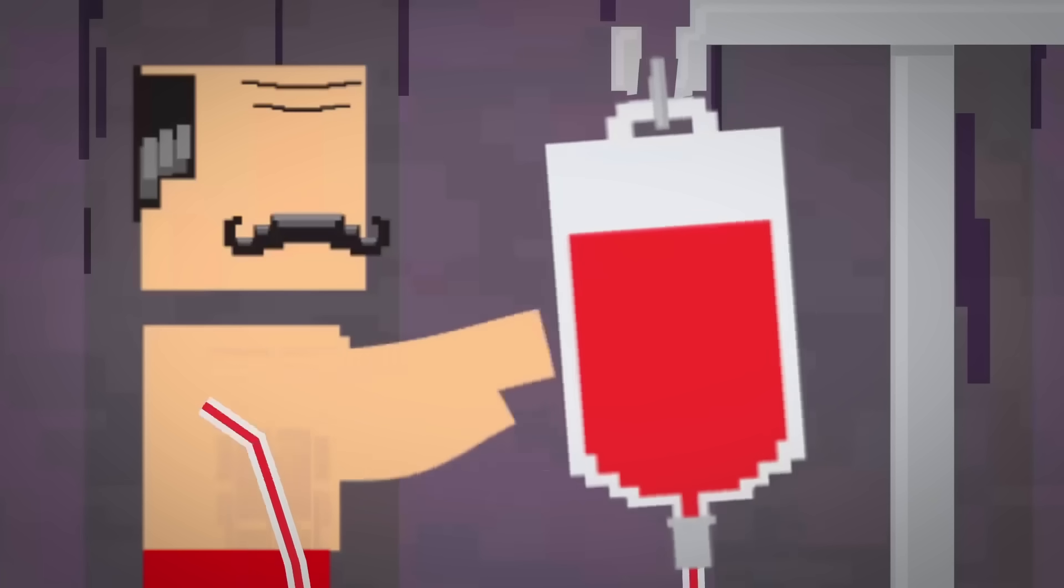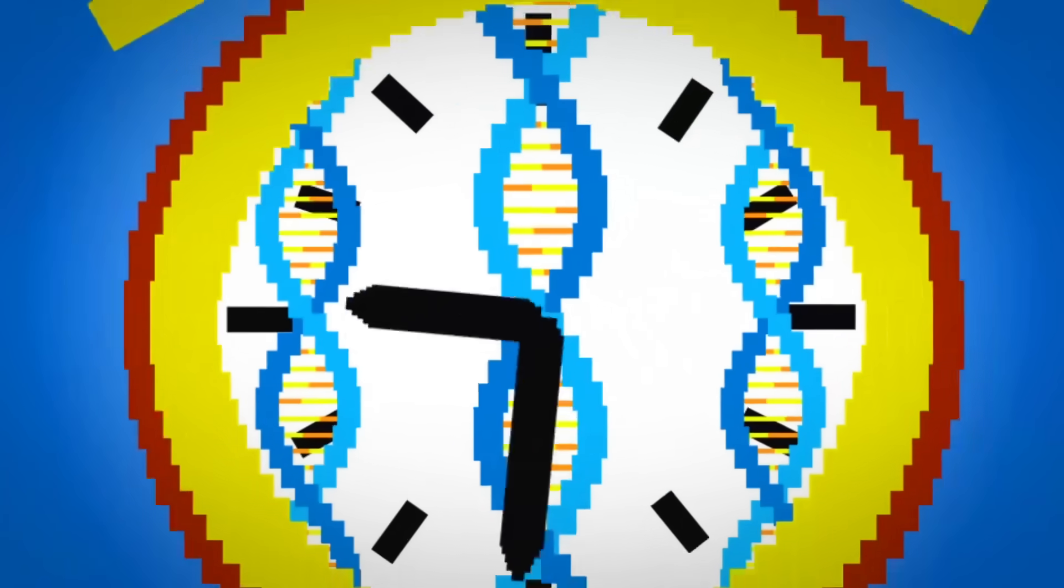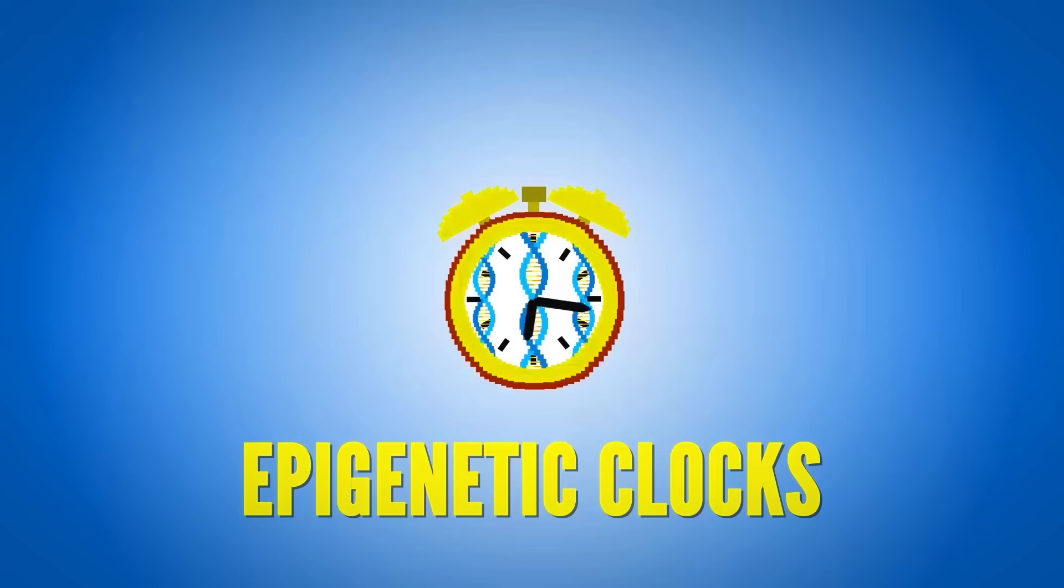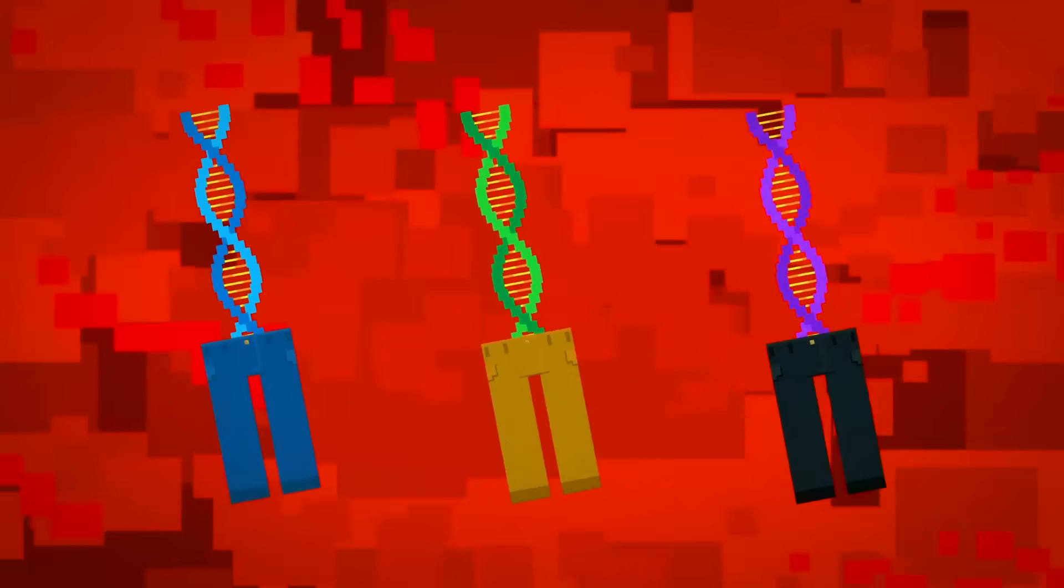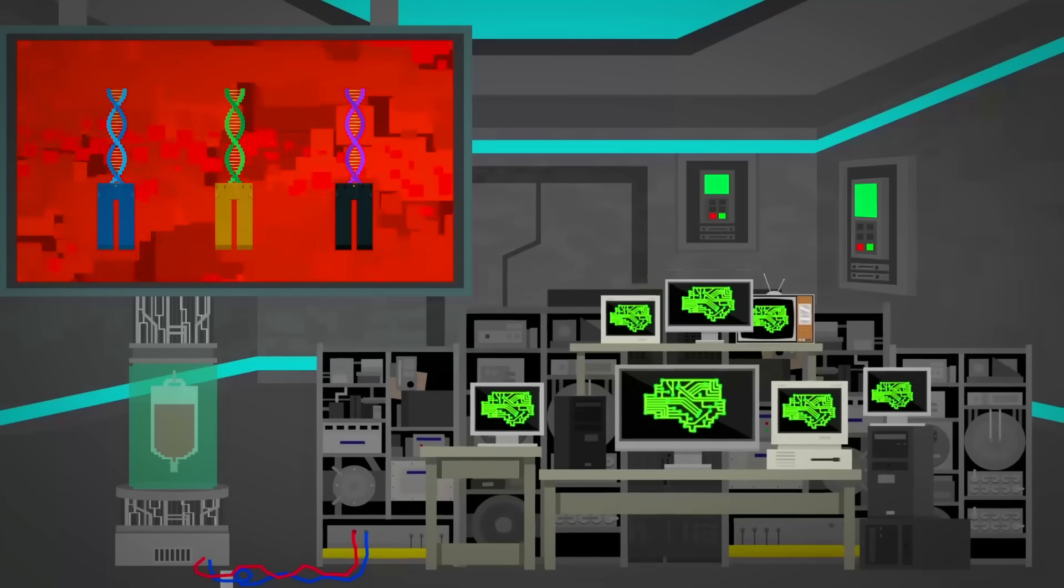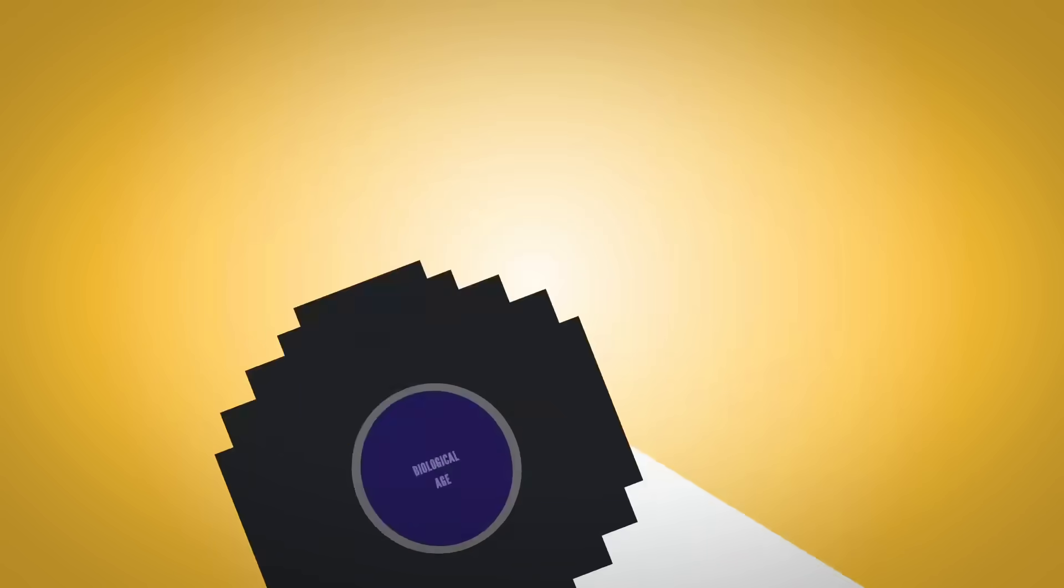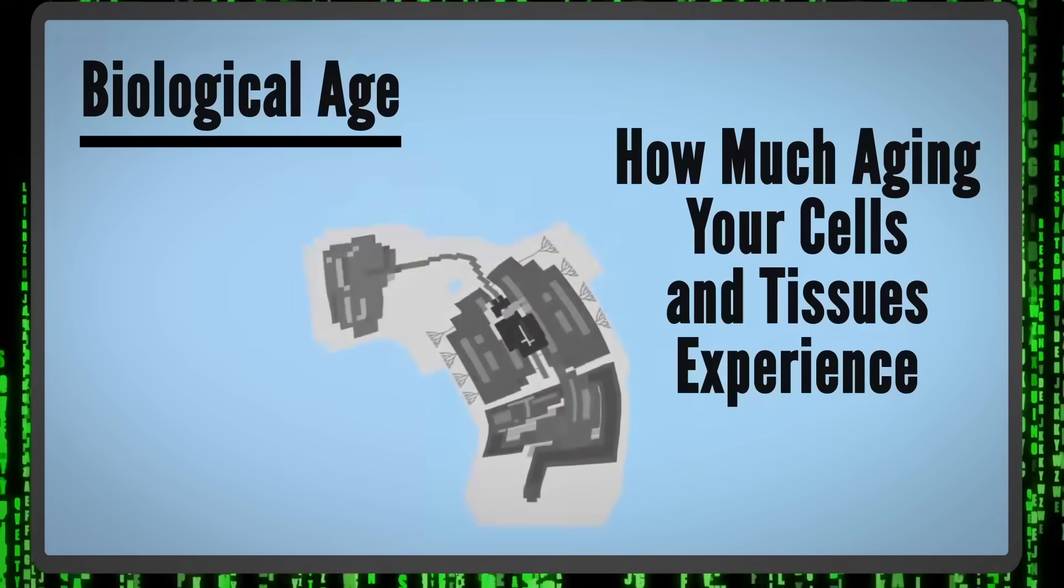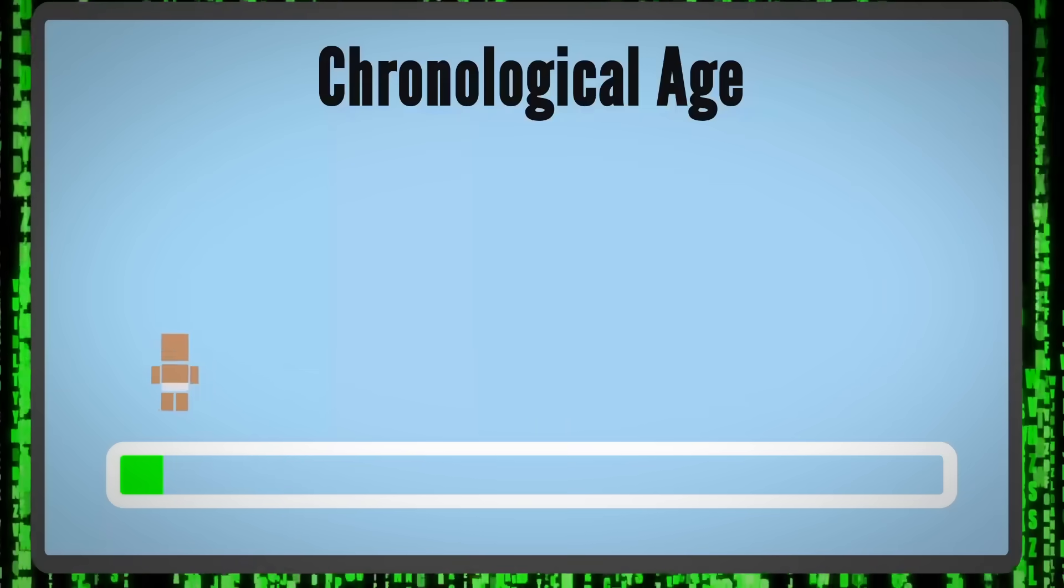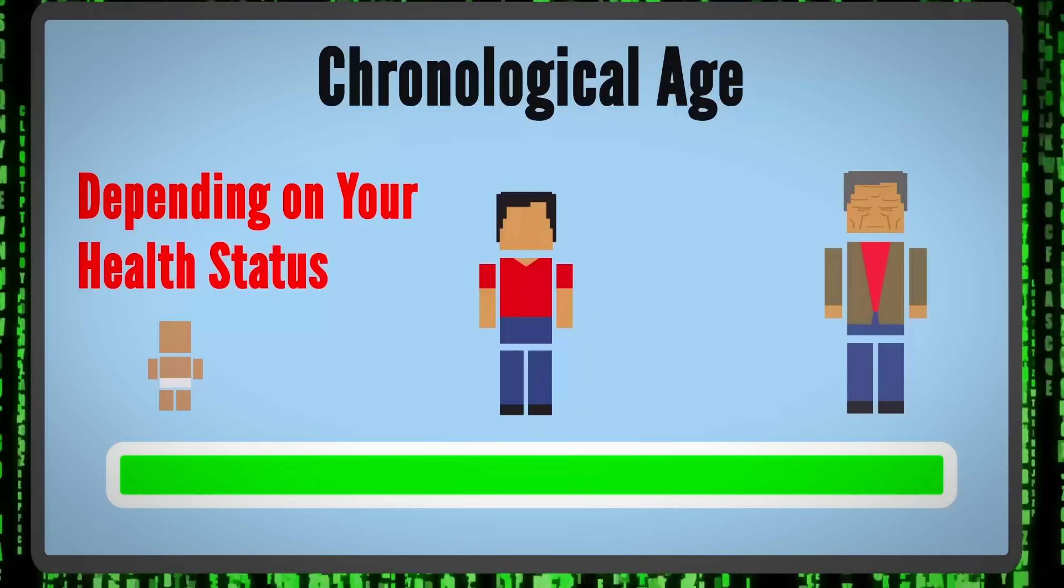While a routine blood analysis couldn't decipher these changes, there are special tests, known as epigenetic clocks, that can. We've actually mentioned one before, called DunedinPace. These tests look for the presence of these molecules on certain genes and use AI algorithms to analyze what they find. They can estimate your biological age, which is how much aging your cells and tissues have experienced. This can be different from your chronological age or how long you've been alive, depending on your health status.